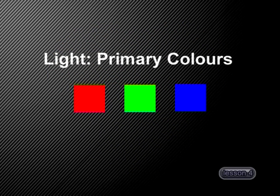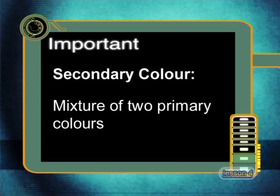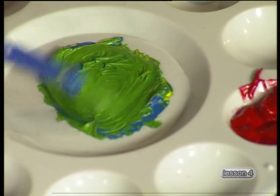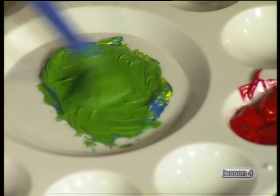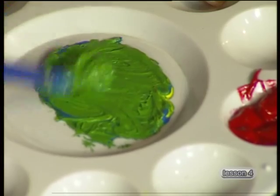Now, when we work with paint, red, green, and blue are no longer the primary colours. Cyan, yellow, and magenta are the primary colours of pigments, because they cannot be made from pigments of any other colours, and we can make all other colours from them. When we mix the primary colours together, we get secondary colours. So the green paint we saw being mixed is a secondary colour — it was produced by mixing cyan and yellow pigments.